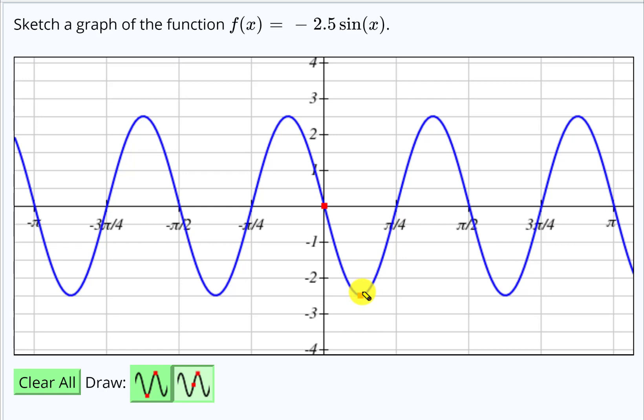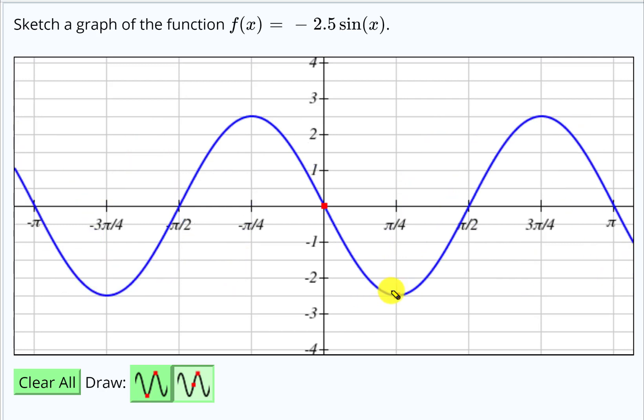The period for sine x is 2π, and if there's nothing out in front of the x where the omega would go, in this case it's a 1, then the period is still 2π. So I have the intercept point and a minimum point.